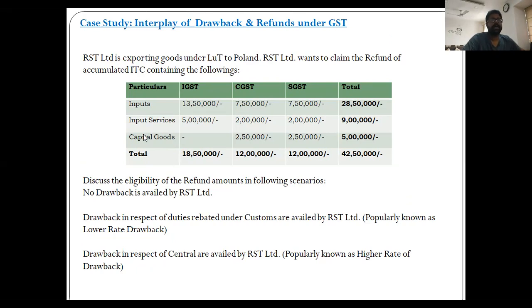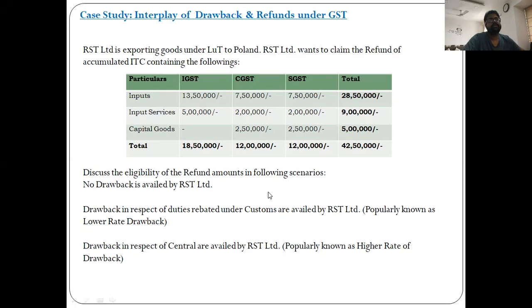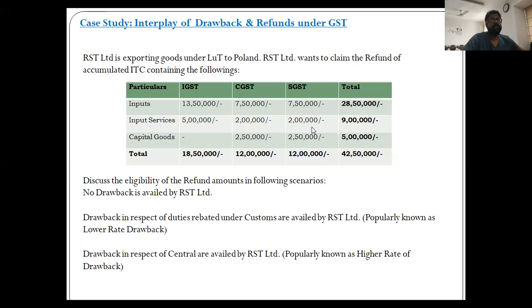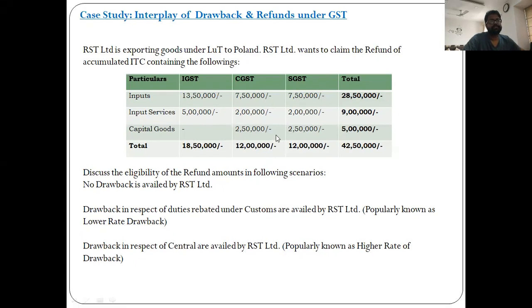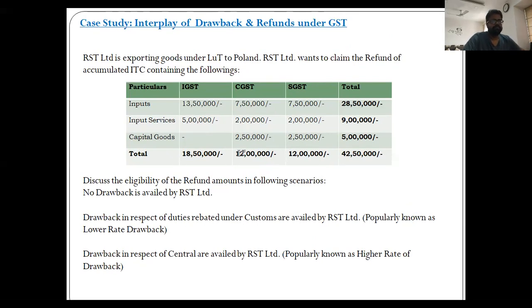Scenario C — drawback in respect of central taxes is availed by RST Limited, meaning he opts for the higher rate of drawback. In that case, his refund will be restricted to only the SGST portion, that is Rs. 7,50,000 plus Rs. 2,00,000 = Rs. 9,50,000. He will not be eligible for central taxes, and capital goods are not eligible in any case. A similar stand was taken in the case of Amit Cotton Industries before the Gujarat High Court in a Special Civil Application.